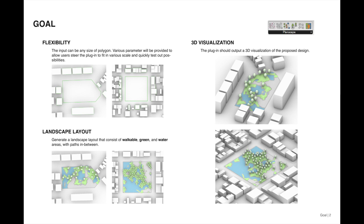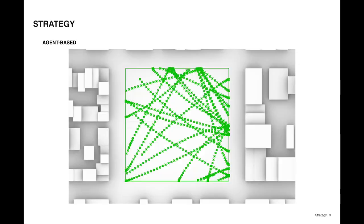Our goal is to produce a Grasshopper plugin that generates a landscape layout consisting of workable, green, and water areas with paths in between, and provides 3D visualization and a good amount of flexibility to fit various inputs and scales.